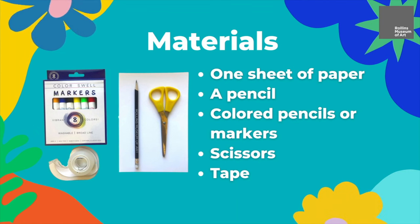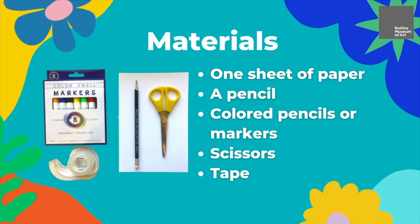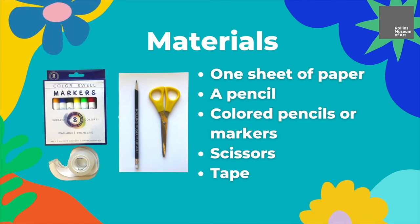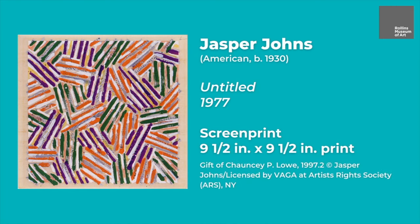Now let's learn a little bit more about our artist Jasper Johns. Jasper Johns was an American artist born in Augusta, Georgia in 1930. He was one of the most famous American artists of the 20th century and is most known today for his abstract expressionist style paintings.